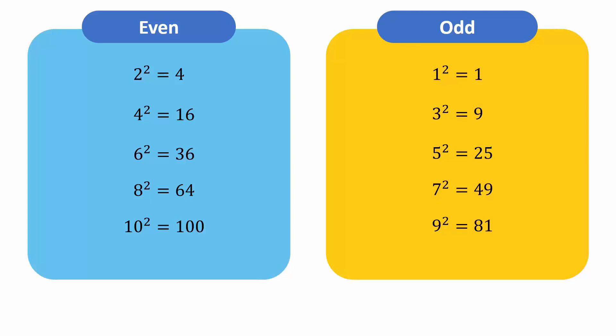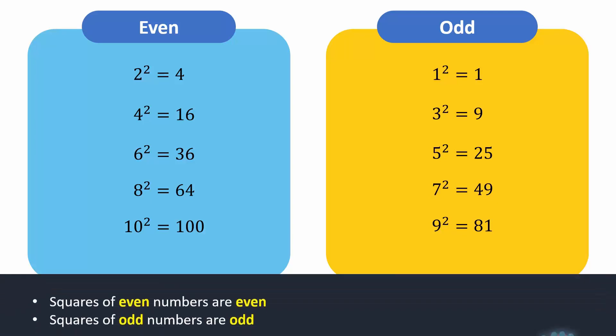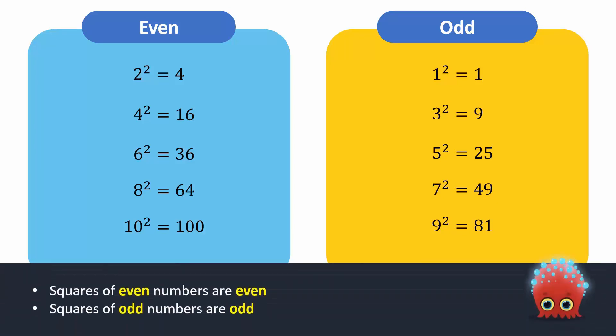The same is true of all numbers. So we can say that the squares of all even numbers are even, and the squares of all odd numbers are odd.